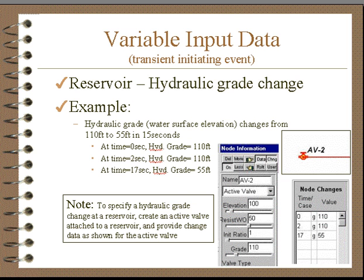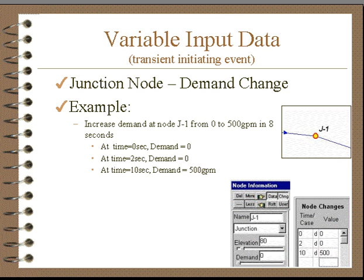Finally, we have variable inputs for demand changes. We select the junction and put in how the demand varies. This particular one shows that at time zero the demand is zero at time two, and from time two to 10 the demand is increased linearly from zero to 500 gallons per minute.